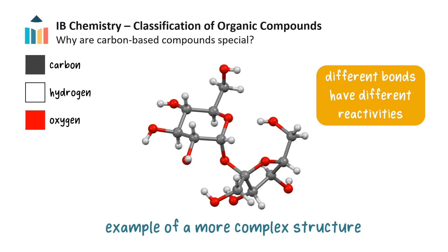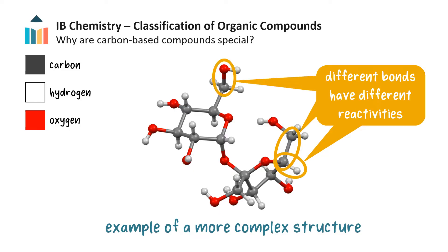The reactivity of an organic compound depends on the types of bonds it contains. Different bonds have different reactivities. Non-polar carbon-carbon bonds and carbon-hydrogen bonds tend to be unreactive, while polar bonds, such as carbon-oxygen single bonds, carbon-oxygen double bonds, or even carbon-nitrogen and carbon-chlorine bonds, can be broken or altered more easily.